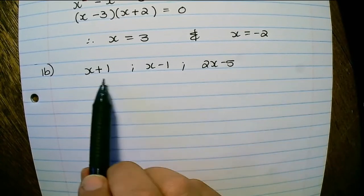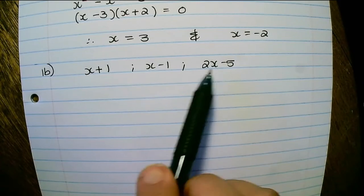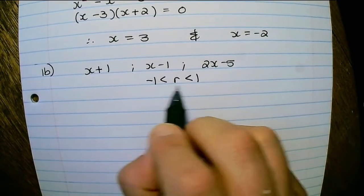And when the series converges the ratio between terms would be between negative 1 and 1.